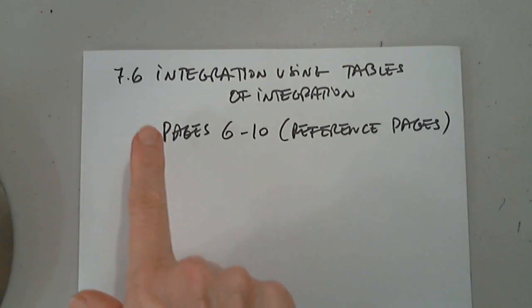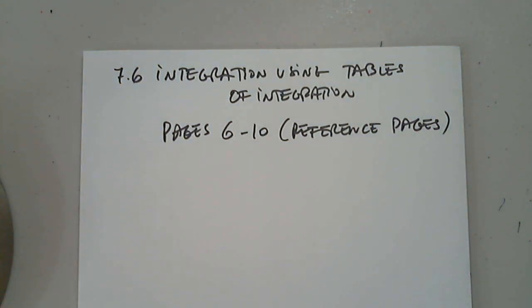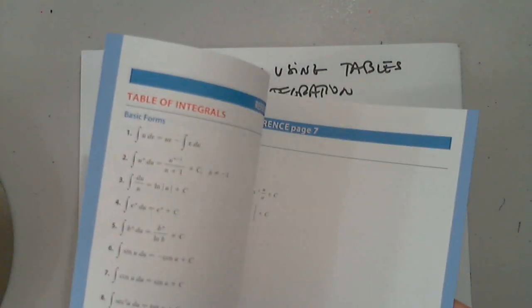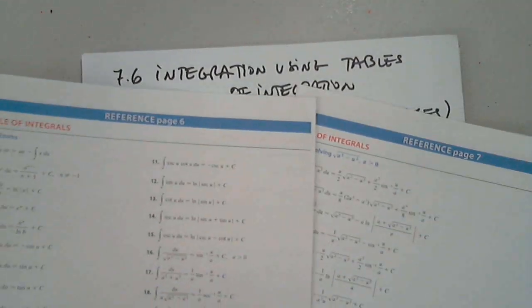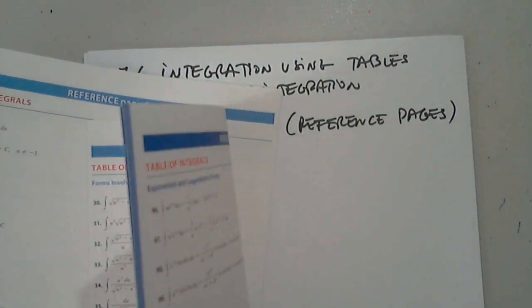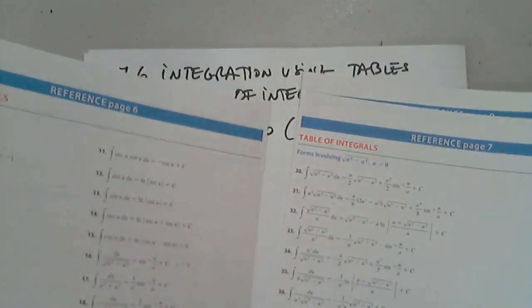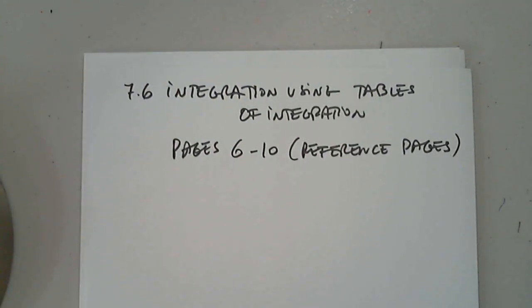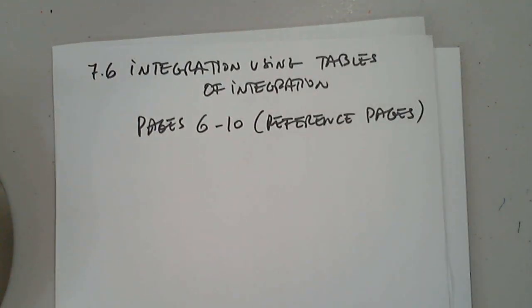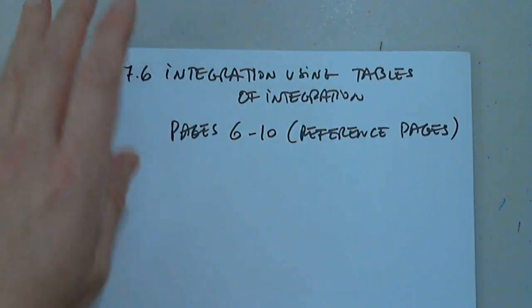Hello again. We're looking at 7.6: integration using tables of integration. You don't have to have a hard copy of the book — you can print out the reference pages. The table of integrals starts on page 6, so pages 6 through 10. Don't expect that the integrals will already be set up like you see them in the tables; you may still have to use some manipulation, maybe a substitution.